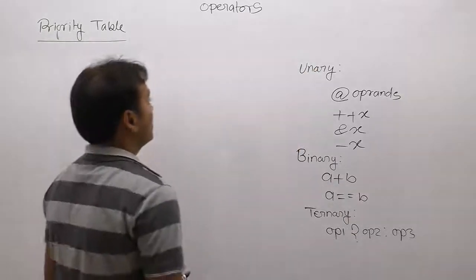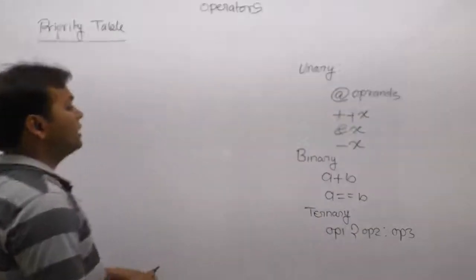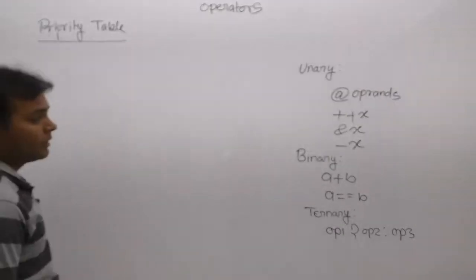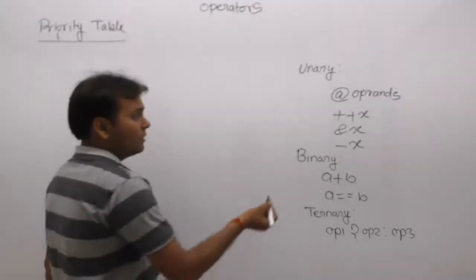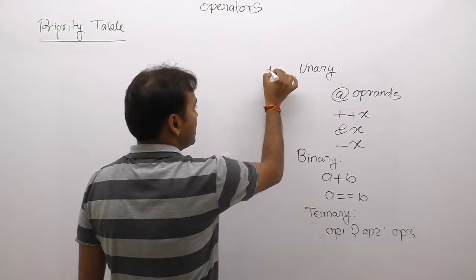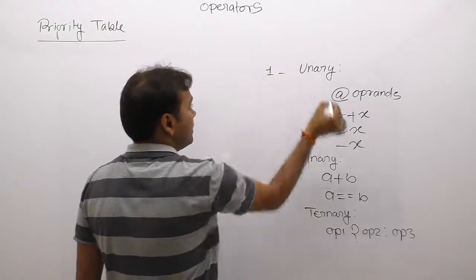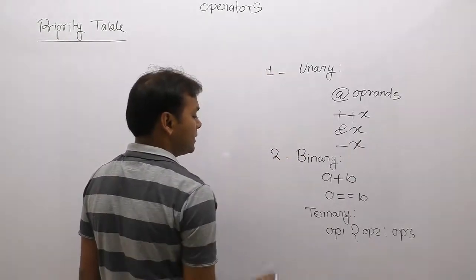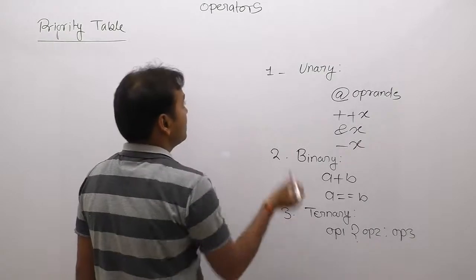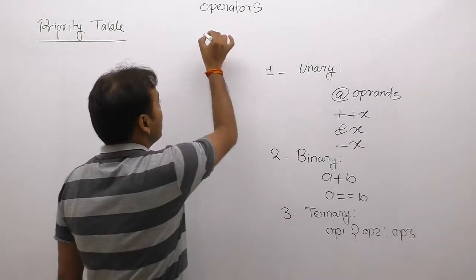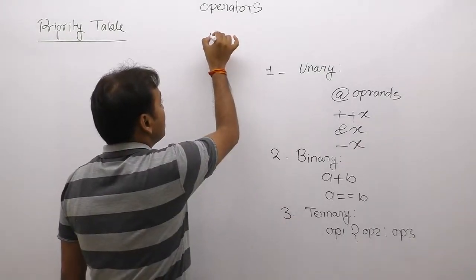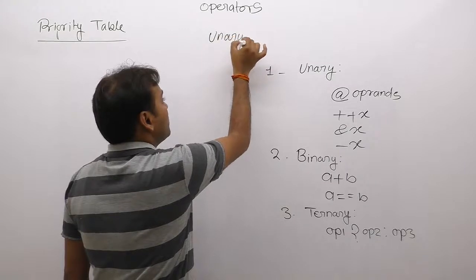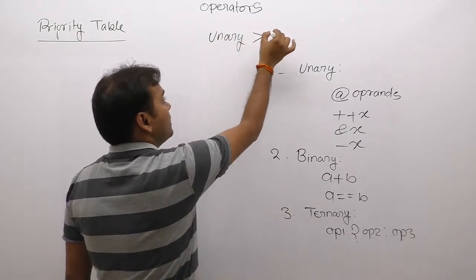Now regarding the priority table — there are three types of operators. The highest priority is taken by unary operators, next by binary operators, and then ternary operators. According to this priority, unary operators are solved first, after that binary operators, then ternary operators.